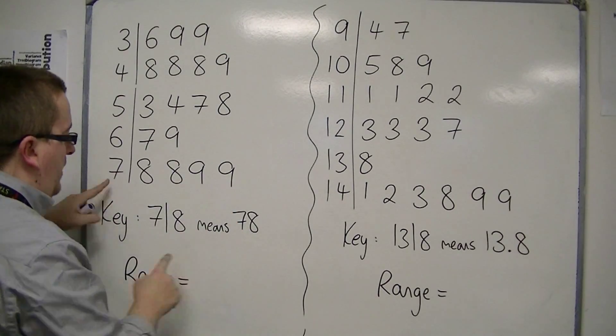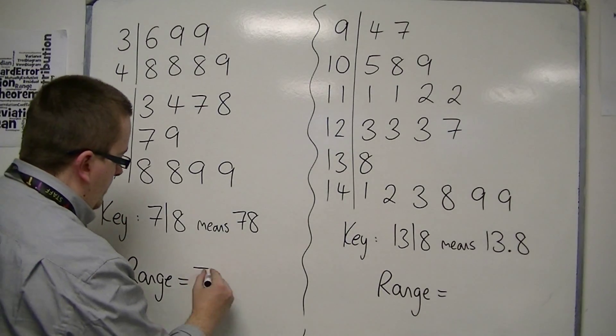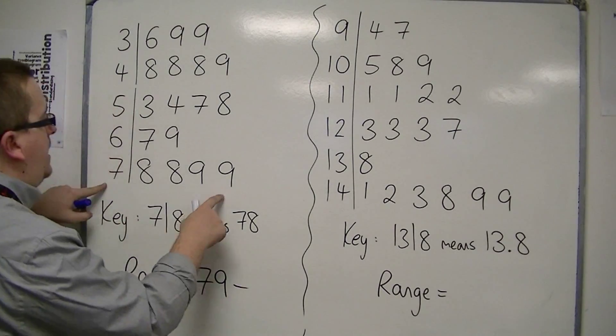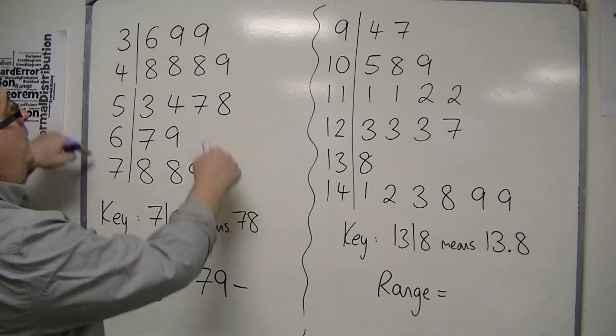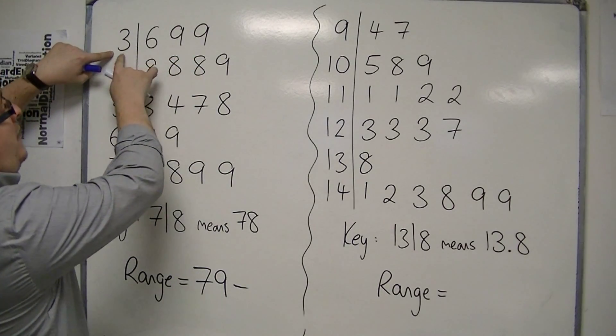OK, remember the key. So this is 79, take away the smallest number in the list, which will be the first, and that's 36.